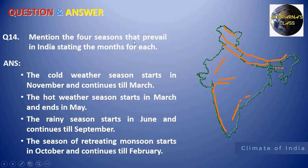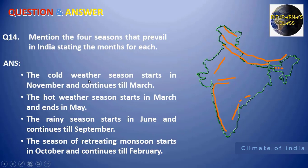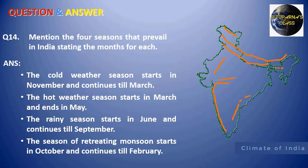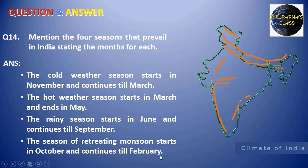Next: mention the four seasons that prevail in India, stating the months for each. First, the cold weather season (winter) starts from November. Second, the hot weather season (pre-monsoon) is from March to May. Third, the rainy season is from June to September. Fourth, the retreating monsoon season starts in October and continues till February, and is characterized by the October heat.